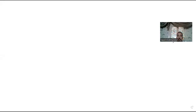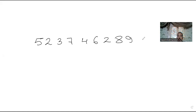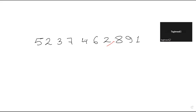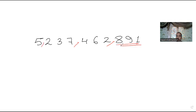I will write the number again: 5,237,462,891. Now I need to read this number. First, I will start from the right side and put a comma after three digits: one, two, three comma; one, two, three comma; one, two, three comma.